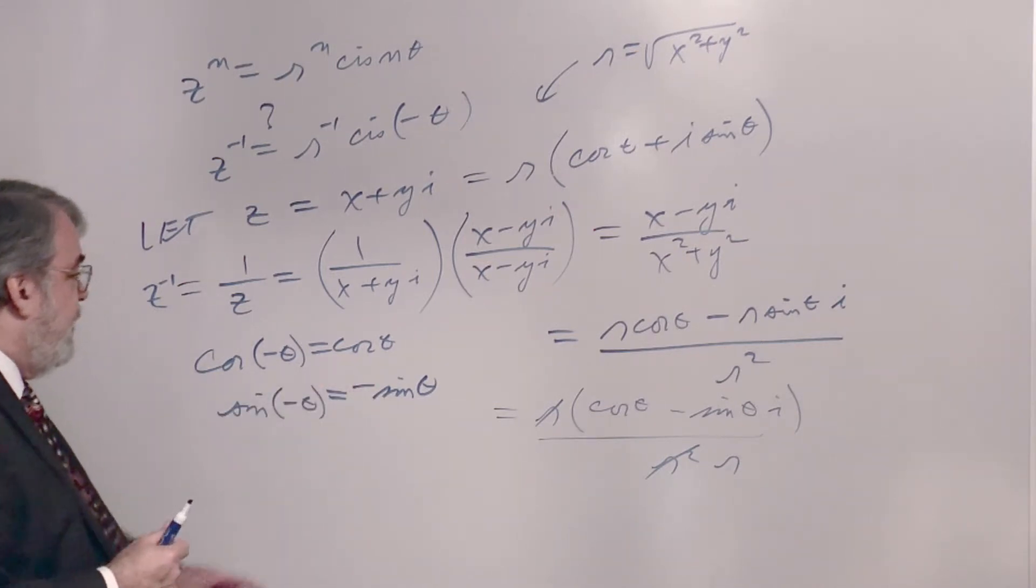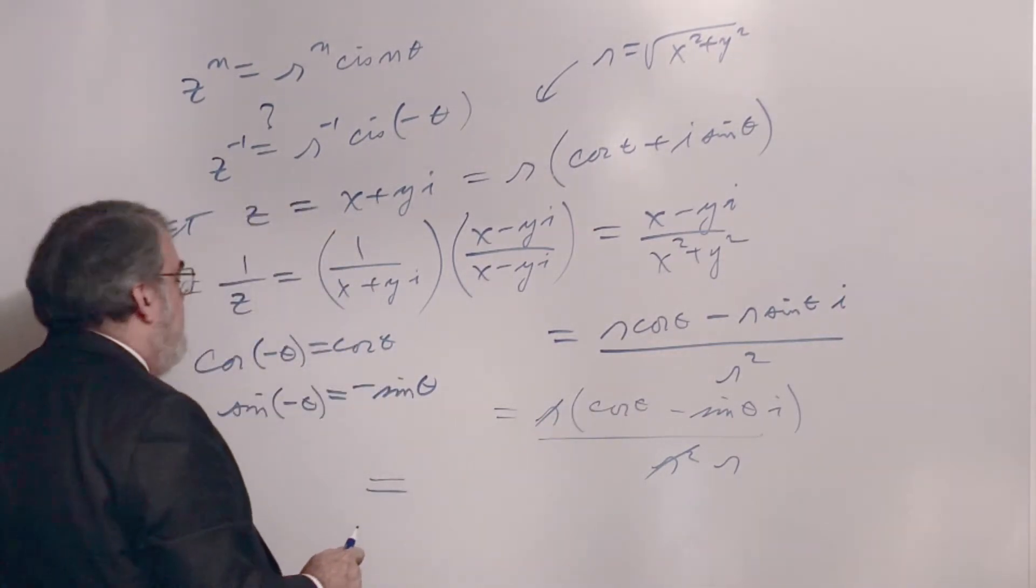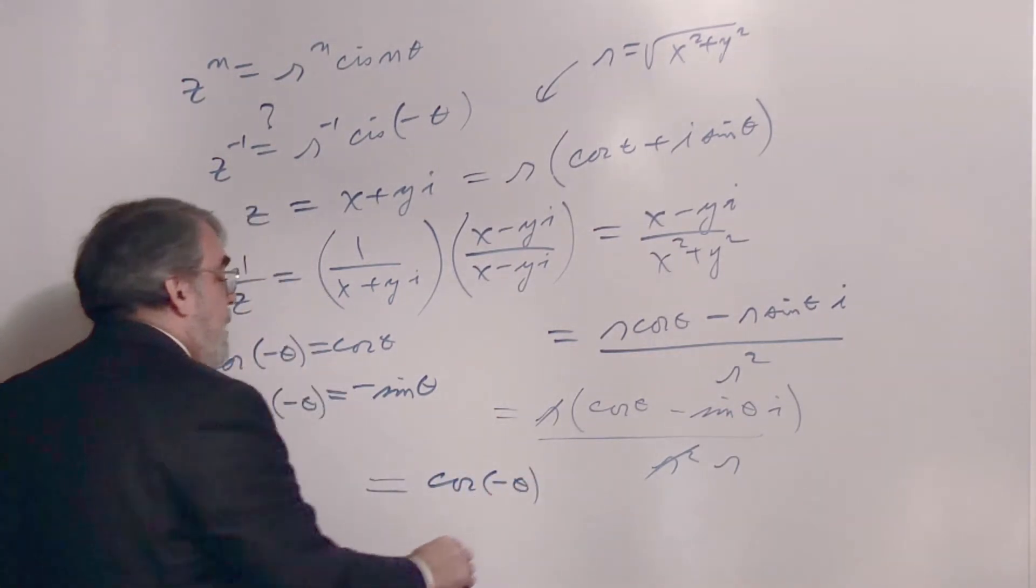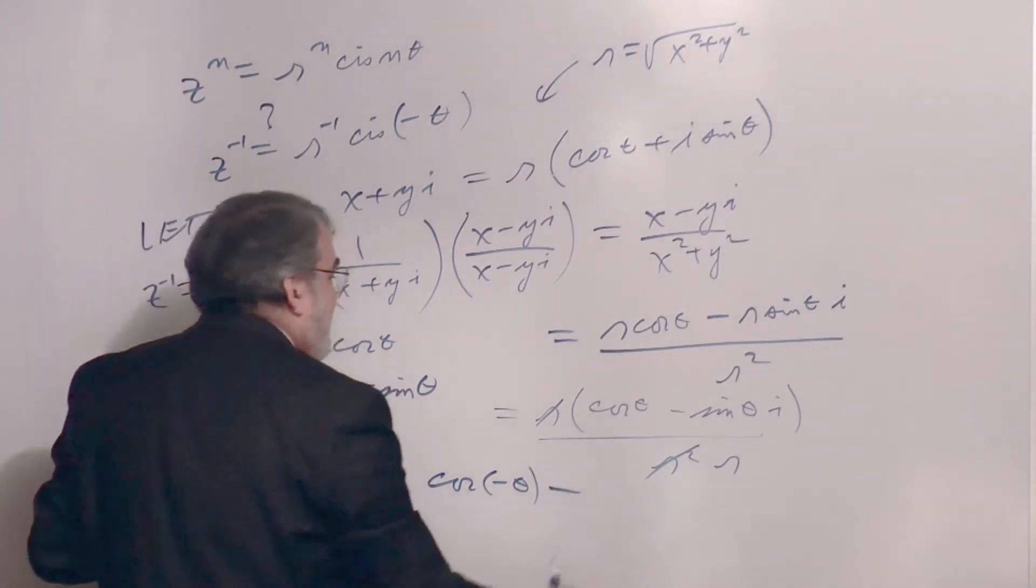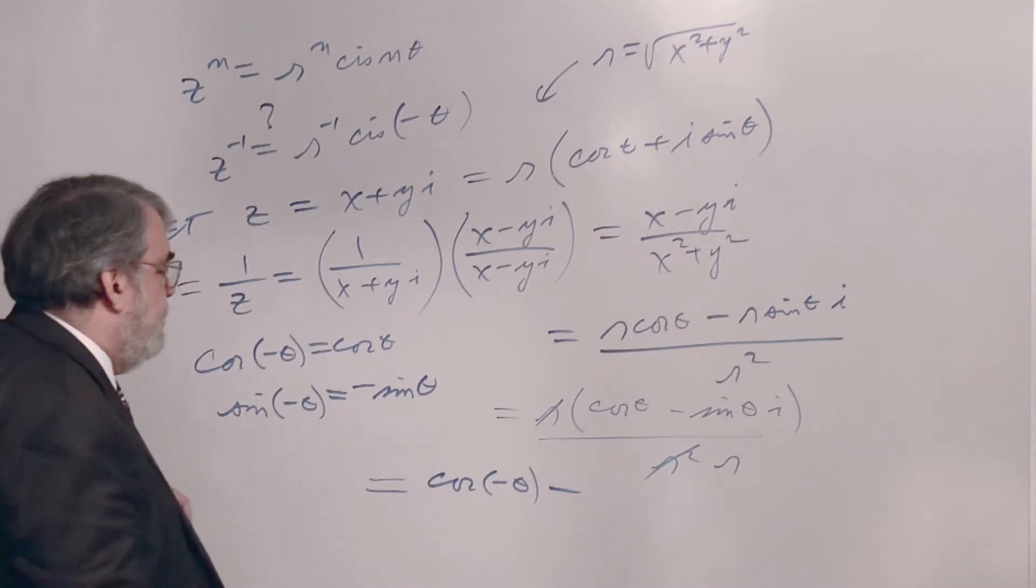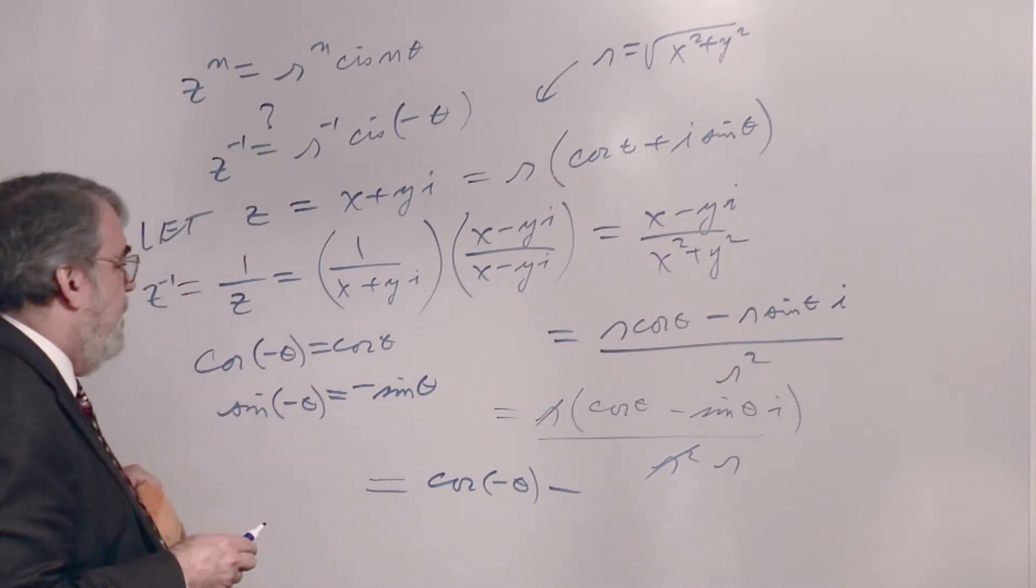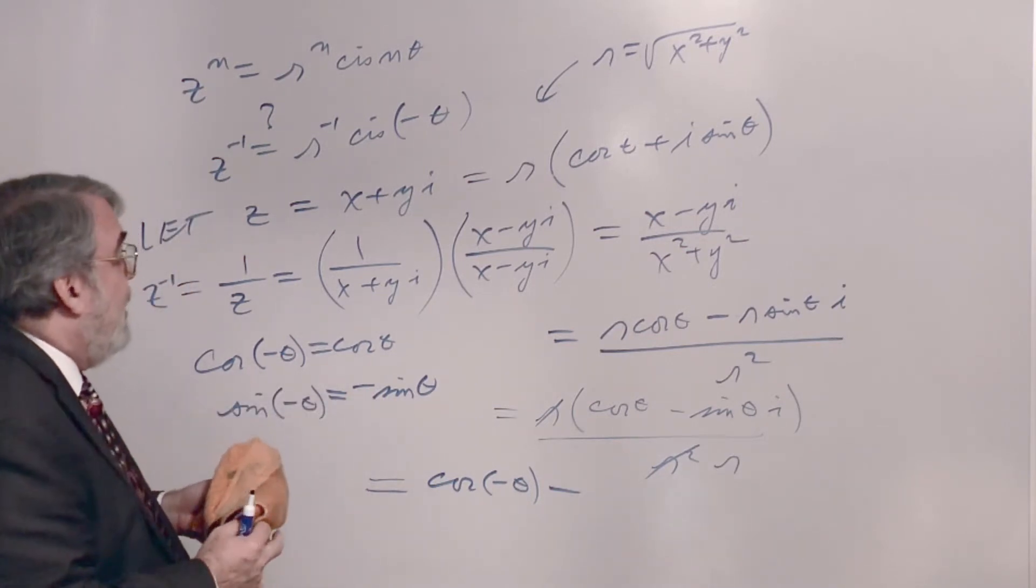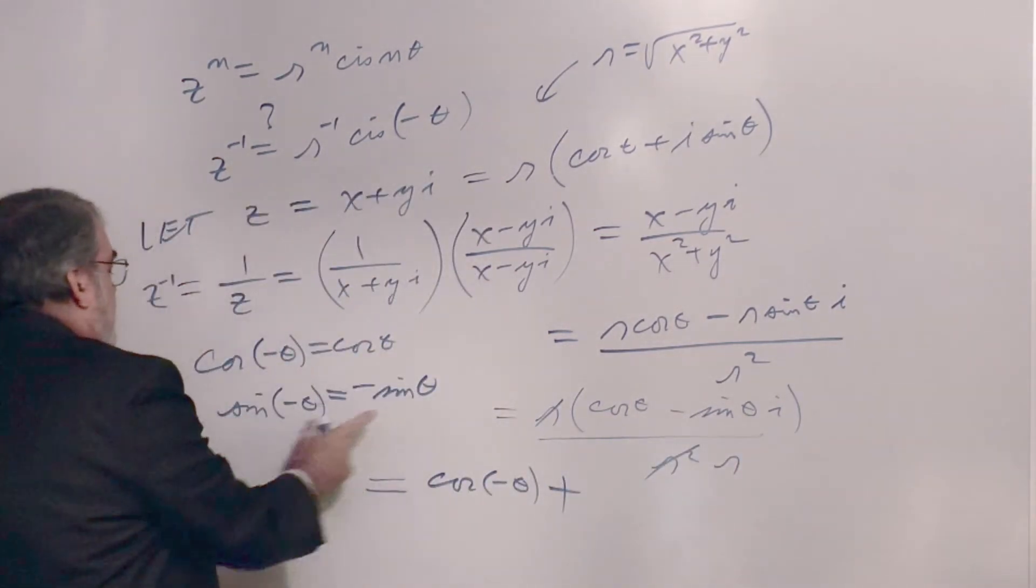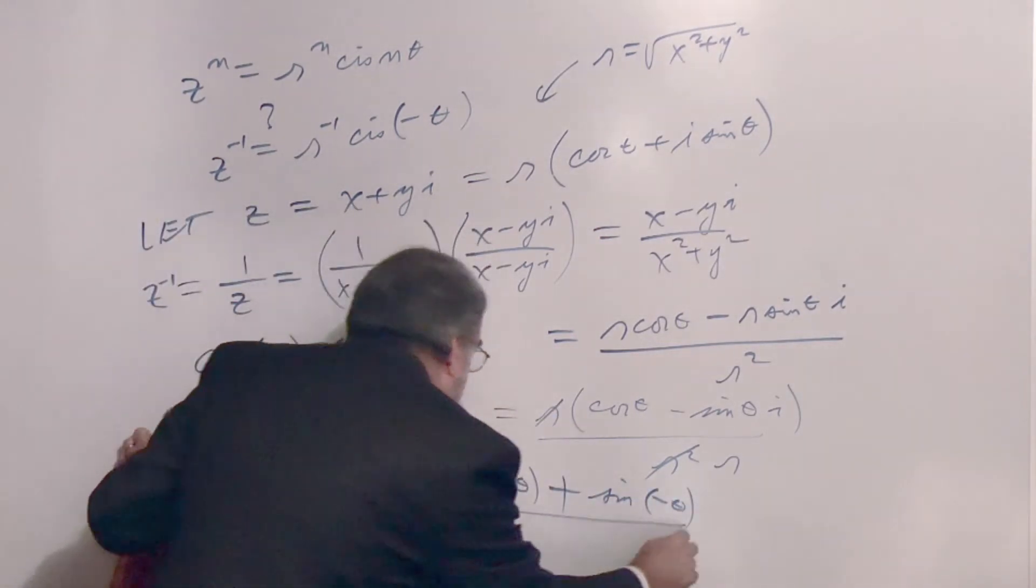Alright. So, this becomes that mess right there I've got on top. I've got, I'm going to replace it. I have cosine minus theta. And then, minus sine theta is sine negative theta. So, this is really a plus, isn't it? Because here's minus sine theta, and that's sine negative theta. Sine negative theta. And it's all divided by r, isn't it?